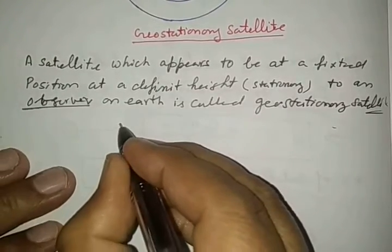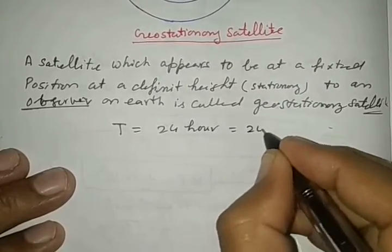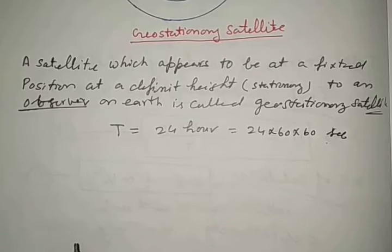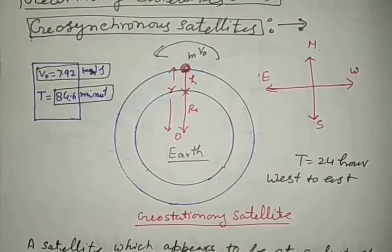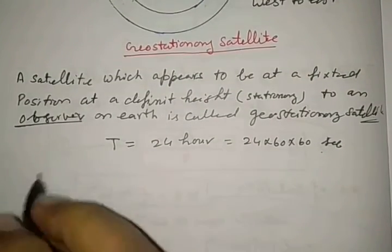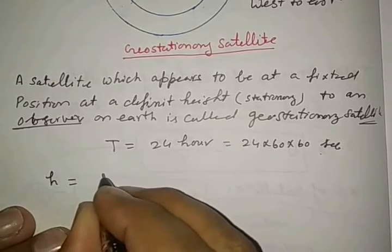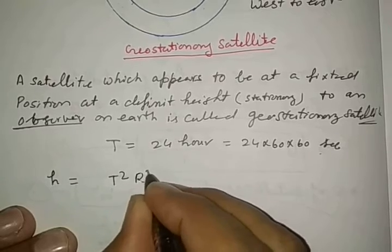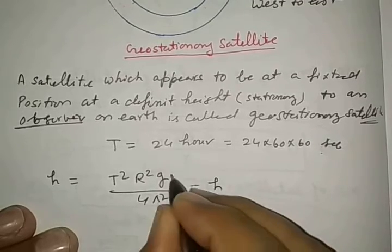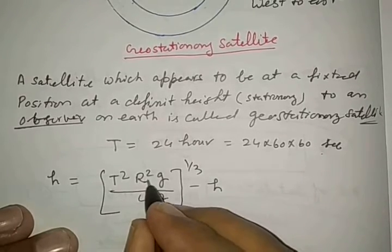For geostationary satellite, the time period must be 24 hours, which is 24 × 60 × 60 seconds. We want to calculate how much height must be required for the geostationary satellite revolving around the Earth. We will use the formula for height of a satellite: h = [(T²R_e²g)/(4π²)]^(1/2) - R_e. Time period is given, R_e is radius of Earth.